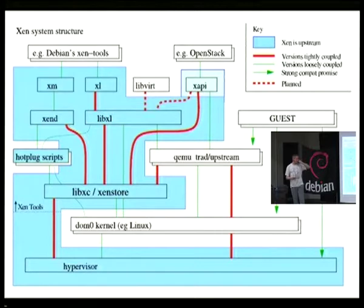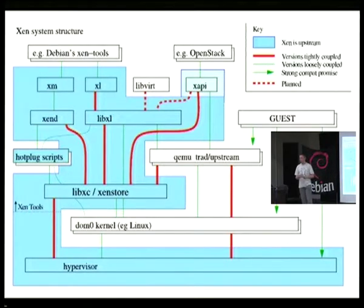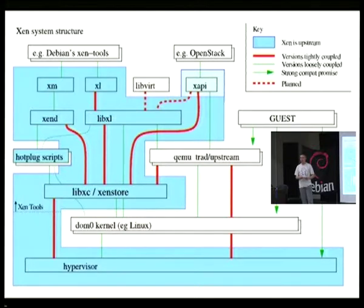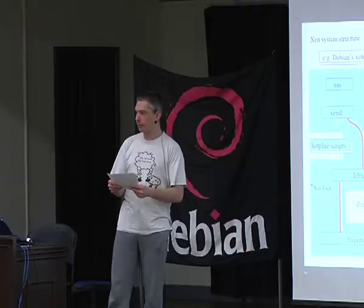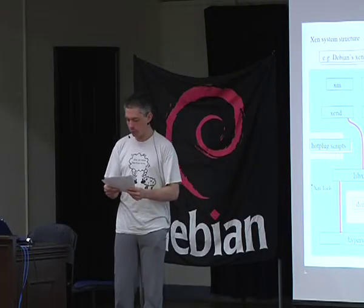The other big part of the system for which we're not upstream is the Dom0 kernel. Most Xen installations use Linux. There are other platforms that support Dom0 kernels, but certainly in Debian the kernel available is Linux. For many years, we maintained a fork of Linux — this is the Xeno Linux that Ian was talking about — which had intrusive changes to the memory management system, interrupt handling, hardware access, and so forth. And this became quite unsustainable, as you might have predicted.